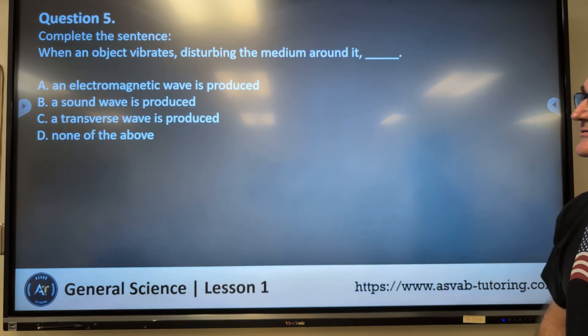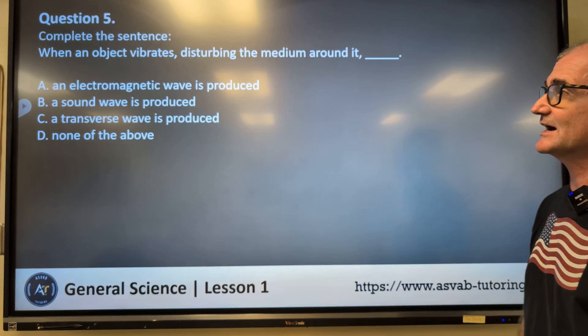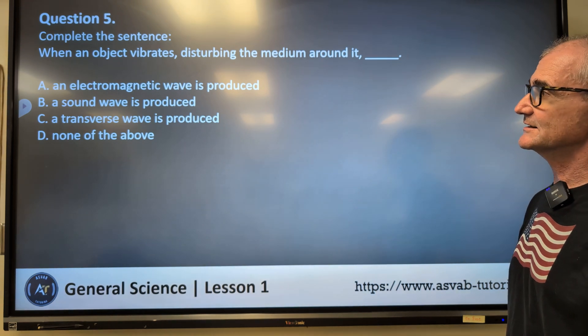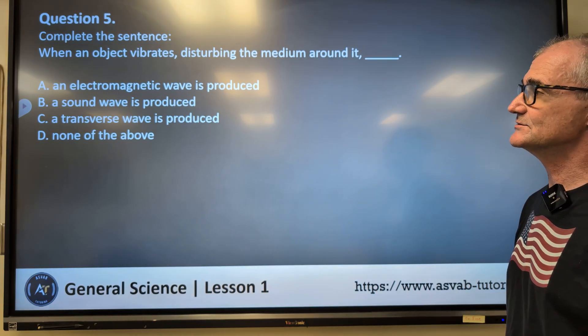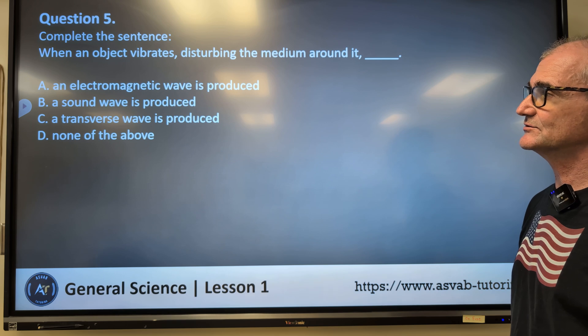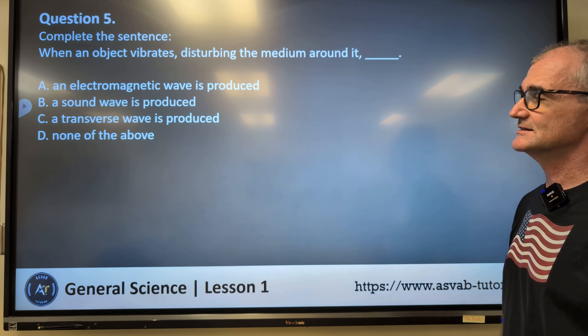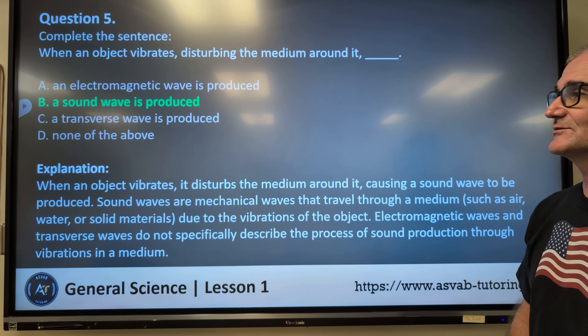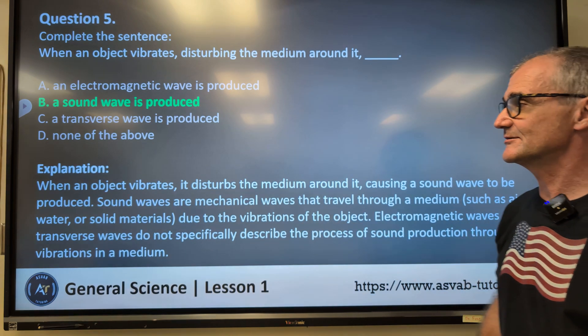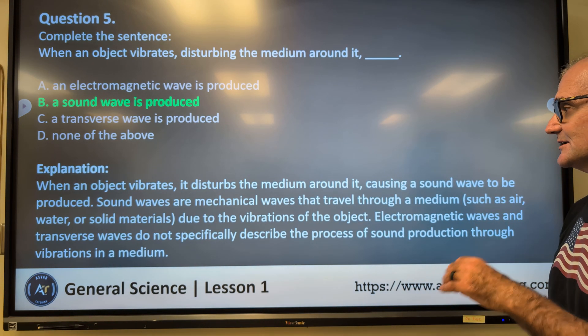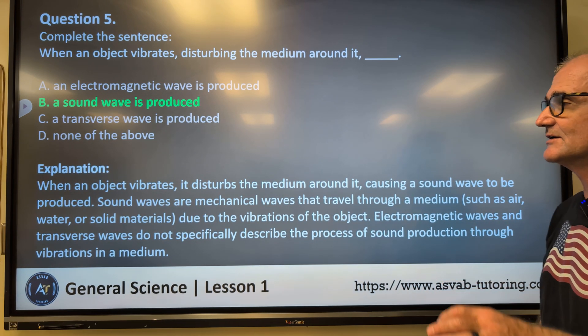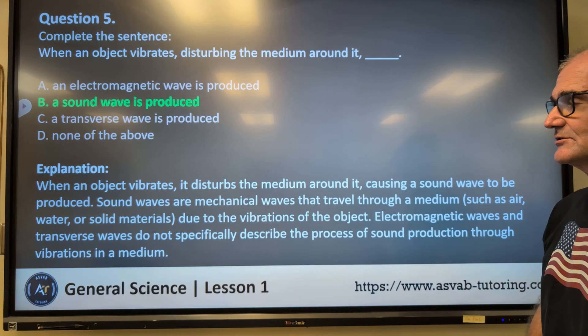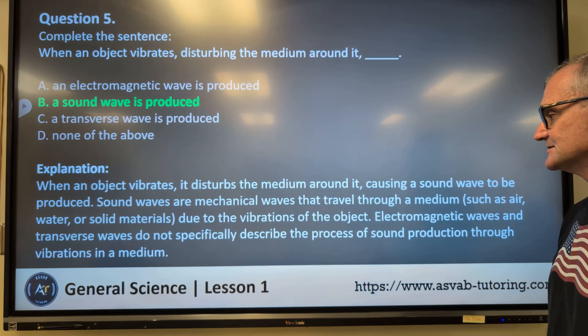Number five. Complete this sentence. When an object vibrates, disturbing the medium around it, A, an electromagnetic wave is produced. B, a sound wave is produced. C, a transverse wave is produced. D, none of the above. Correct answer B, a sound wave is produced. When an object vibrates, it disturbs a medium around it, causing a sound wave to be produced. Sound waves are mechanical waves that travel through a medium, such as air, water, or solid material, due to the vibrations of the object.